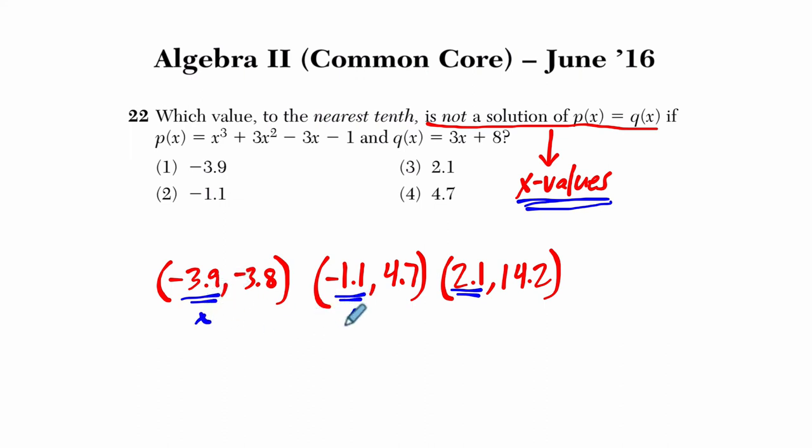this is one x, two x, and three x's that work as a solution for this system. And I'm going to cross these off then. Negative 3.9, negative 1.1, and 2.1.